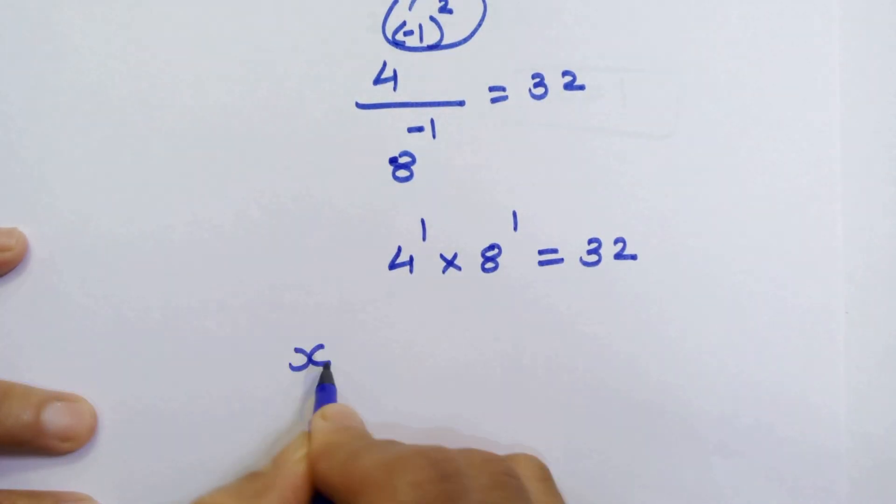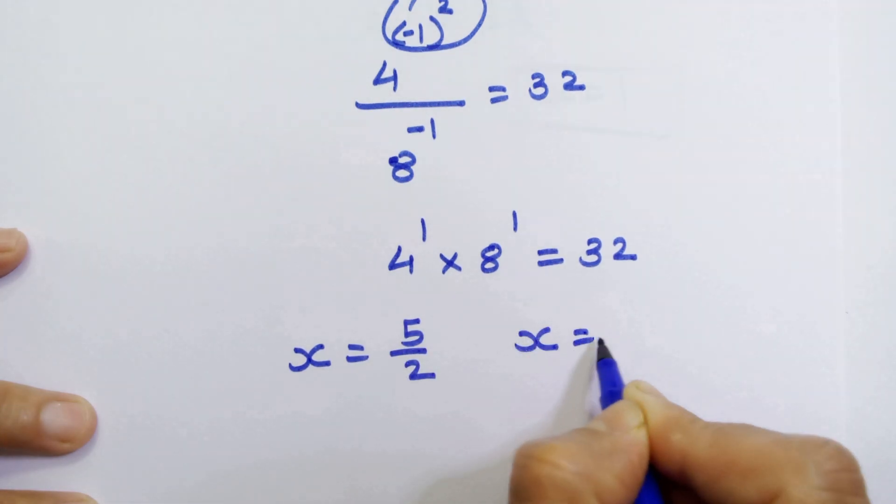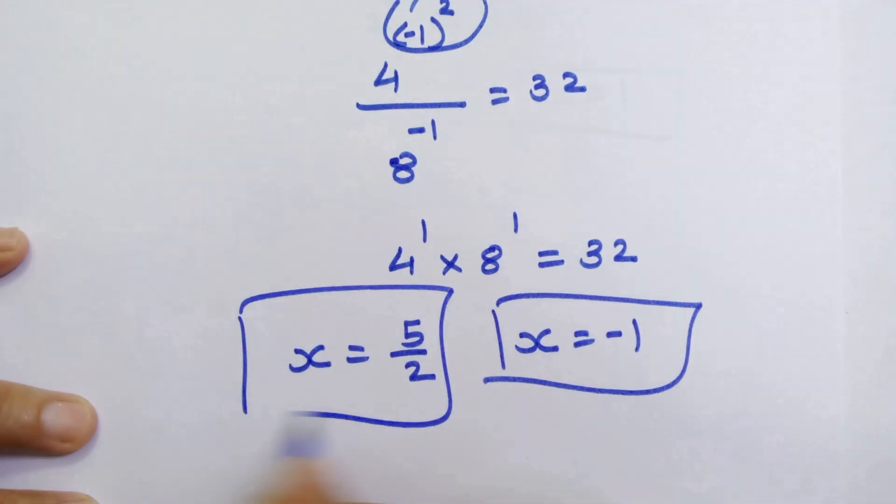So, x is equal to 5 upon 2 and x is equal to minus 1 are the correct answers. Thanks for watching and see you in the next one. Don't forget to subscribe. Bye bye.